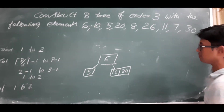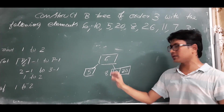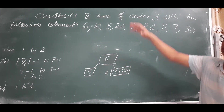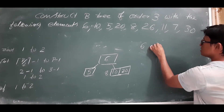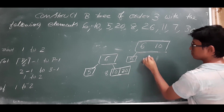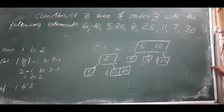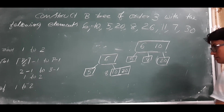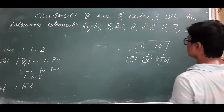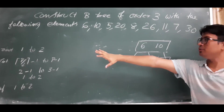Now I want to insert 8. 8 is greater than 6, so it goes to the right subtree, and 8 is less than 10, so it comes before 10. But I cannot insert here — it is an overflow condition. I take the median and promote it to the parent node. The parent node now consists of 6 and 10 as root, with 5, 8, and 20 as children. The root has two keys, which is not a problem.